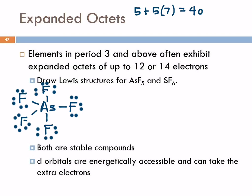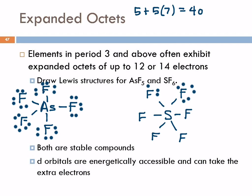Let's look at sulfur hexafluoride. We've got six fluorines, each with seven valence electrons — six times seven is 42, plus six for sulfur, gives us 48 total. We place all 48 electrons and sulfur ends up with twelve electrons around it — an expanded octet. Both of these are stable compounds. They violate the octet rule and we just have to be okay with it. Other theories will show us what's going on with arsenic and sulfur and how they can do this.